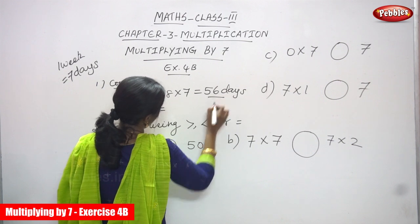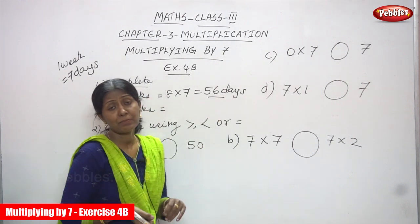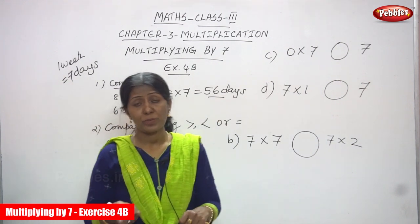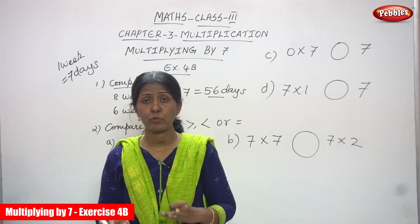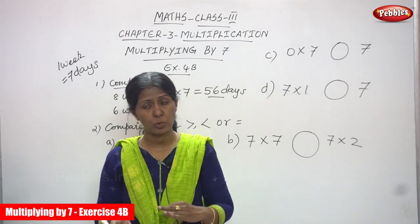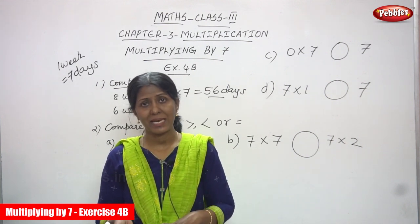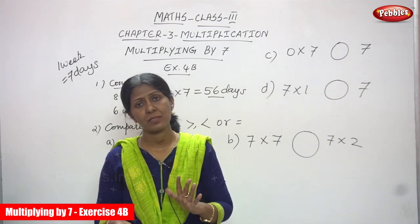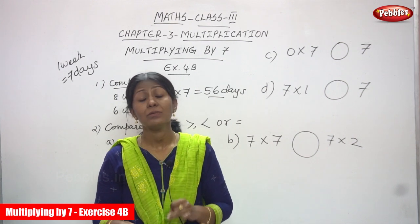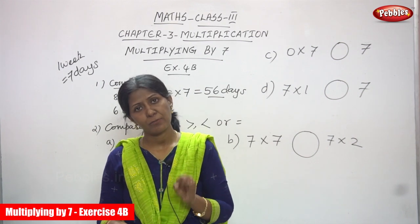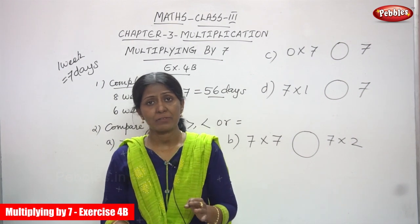8 sevens are 56 days. You must say the 7th table: 7 ones are 7, 7 twos are 14, 7 threes are 21, 7 fours are 28, 7 fives are 35, 7 sixes are 42, 7 sevens are 49, and 7 eights are 56.